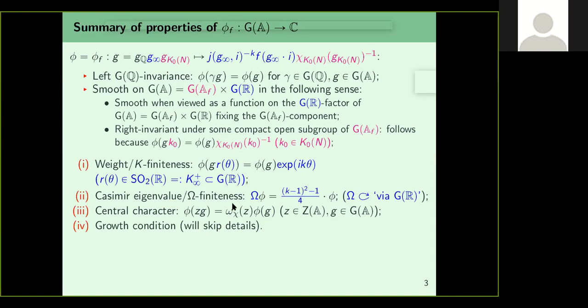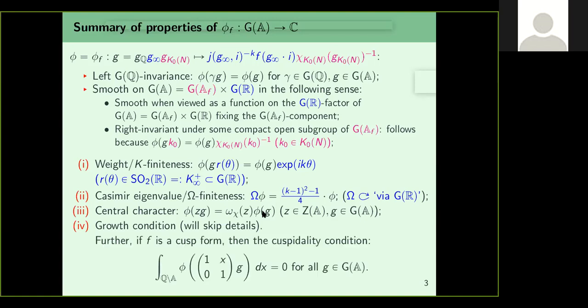The third property was the central character property. From chi, we defined a character ω_chi of the center Z(A). If you change G to zG, you get ω_chi(z)·φ(G). Fourth was a growth condition. Finally, if F is a cusp form, we had the cuspidality condition. Remember, this means there is only one cusp essentially when working over adeles. All these properties are straightforward adaptations from the SL2(R)/Γ₀(n) setting.